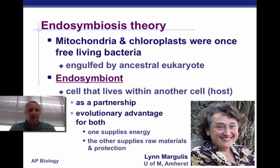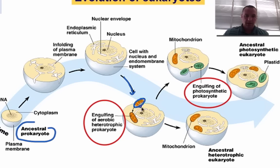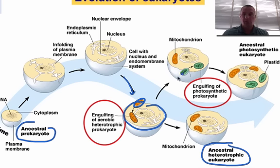This lady down here, Lynn Margulis, she is from the University of Massachusetts at Amherst. She actually died in November 2011. She's credited with actually publishing the first endosymbiotic theory. She got her work from other people before her, but she's accredited with it. Believe it or not, she was turned down a lot of times before she actually got it published. We started out with an ancestral prokaryote, and over time it ingested a mitochondria, and then it developed into what we consider the ancestor of heterotrophic eukaryotes. That same one might have gone on another pathway and ingested chloroplasts — these plastids — and it became the ancestor of photosynthetic eukaryotes.